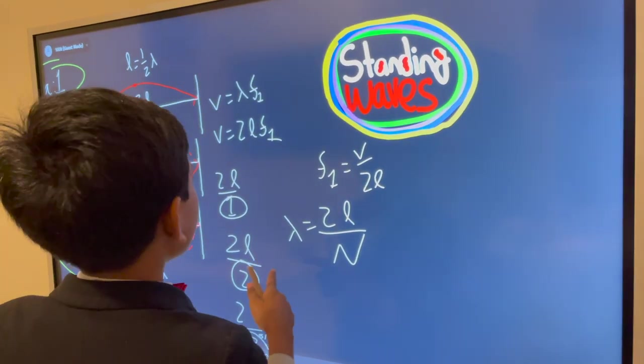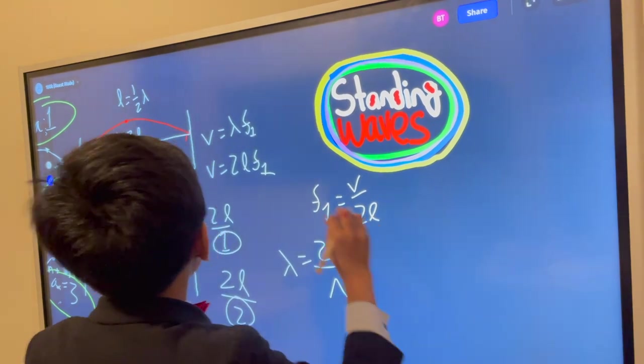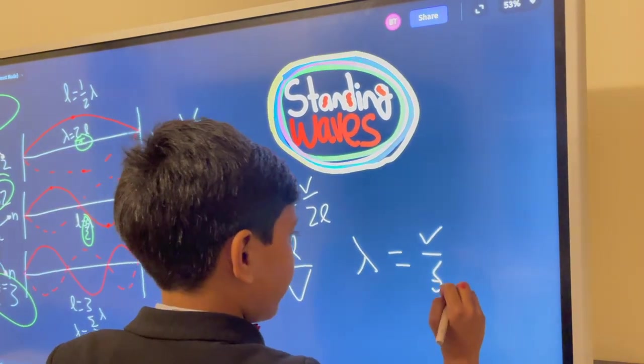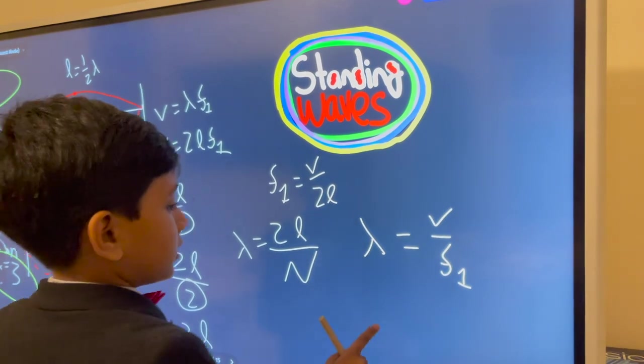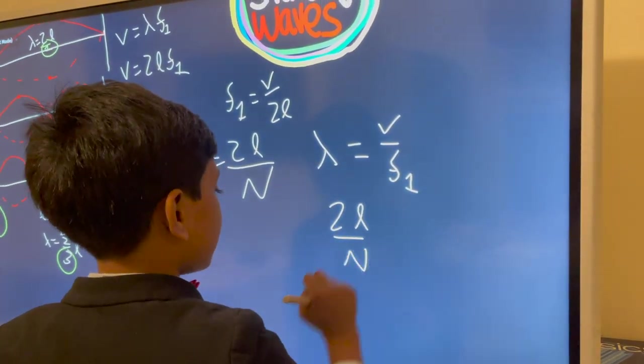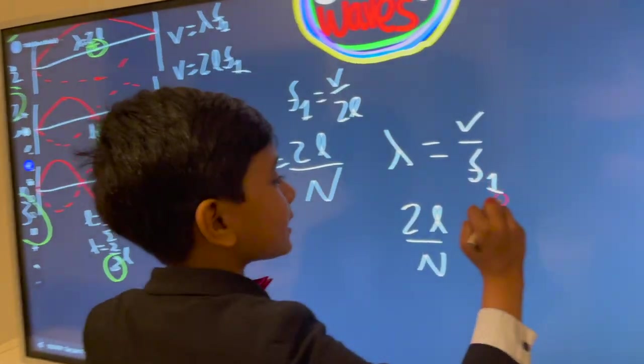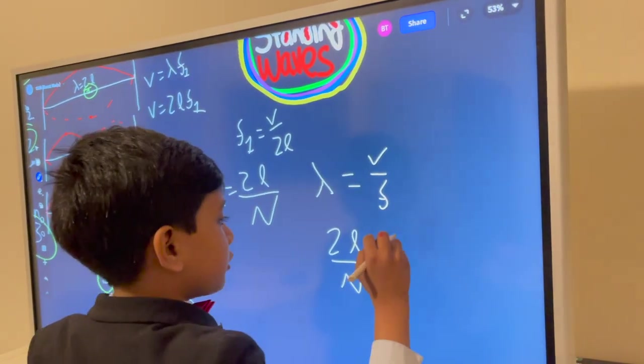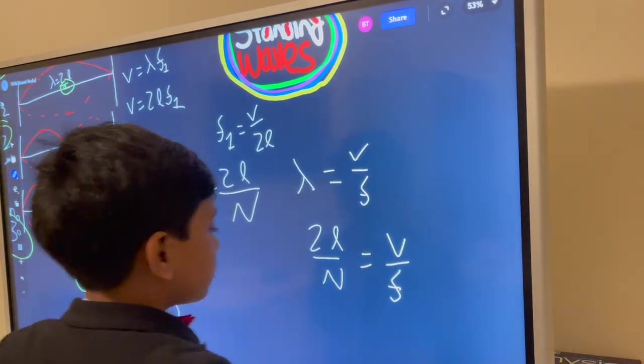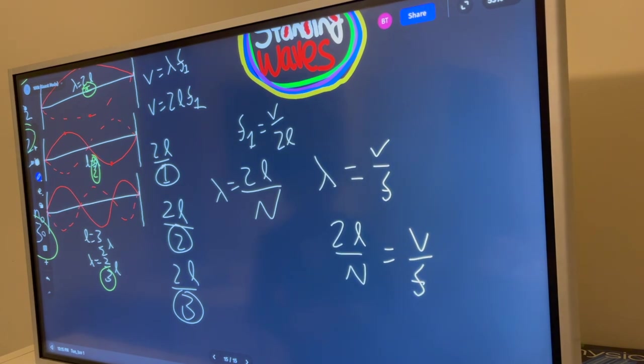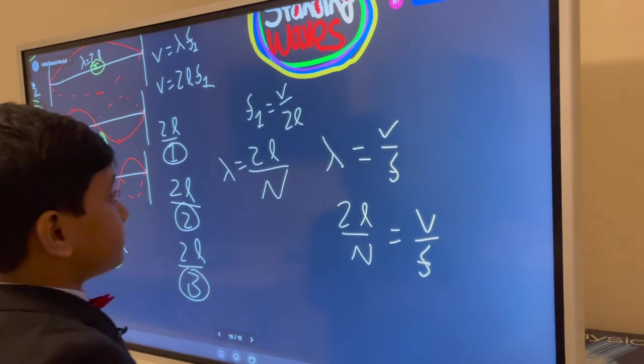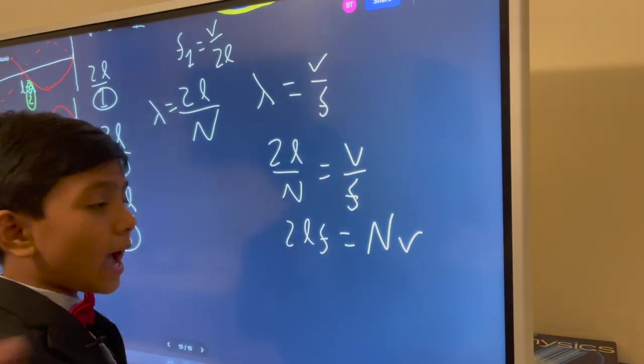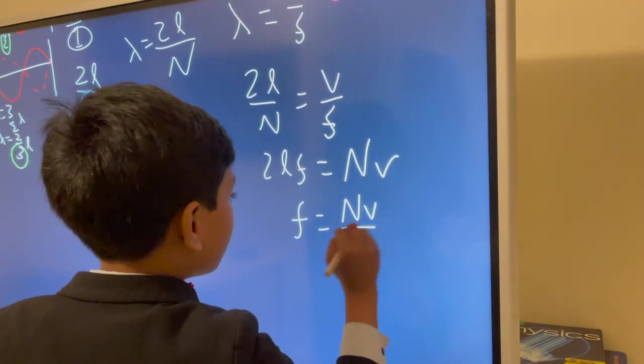All right. So now, where have we heard of lambda before? So let's see if we can plug in lambda on this equation here. So lambda would be v over our fundamental frequency. So now we plug this in. And 2L over n equals v over f. So now, let's look at what happens next. Because a lot is about to happen. 2L f equals n v. And now, let's find f. f equals n v over 2L.